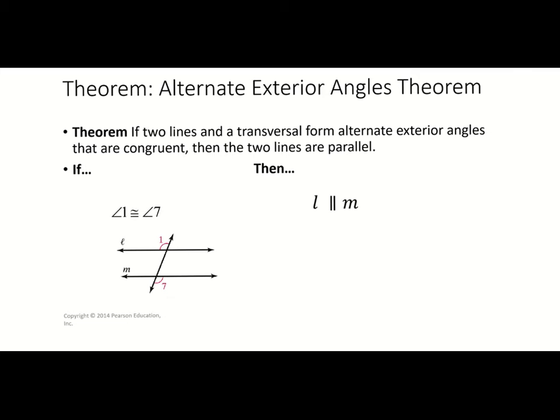The next theorem is the alternate exterior angles theorem. This theorem says if two lines and a transversal form alternate exterior angles that are congruent, then these two lines are parallel. They've marked angle one and angle seven, which are alternate exterior angles to the transversal. Because those angles are congruent, that means your lines are parallel.